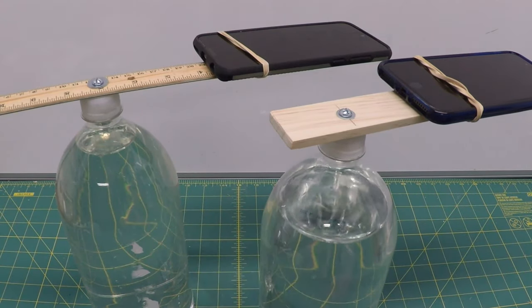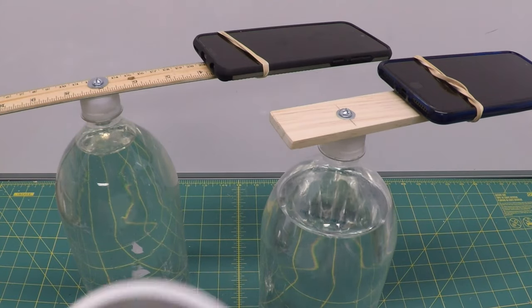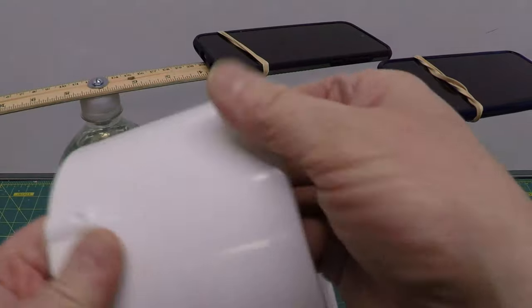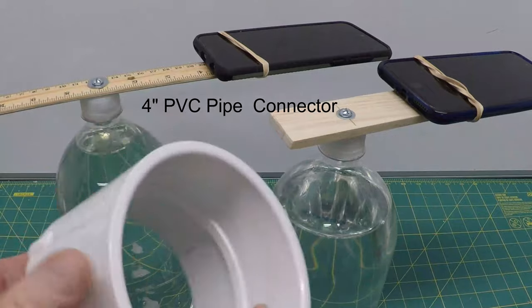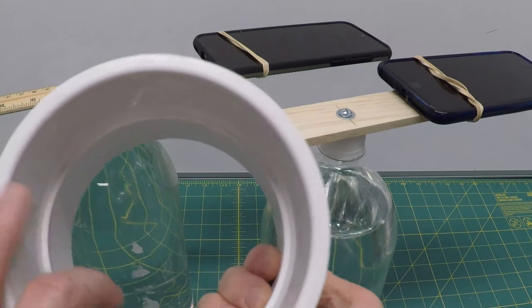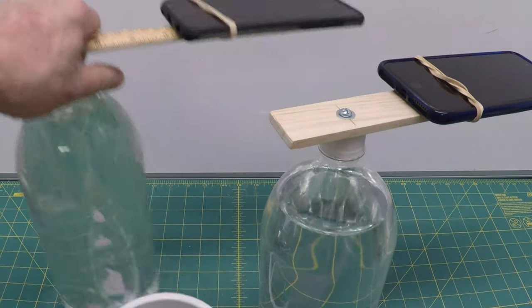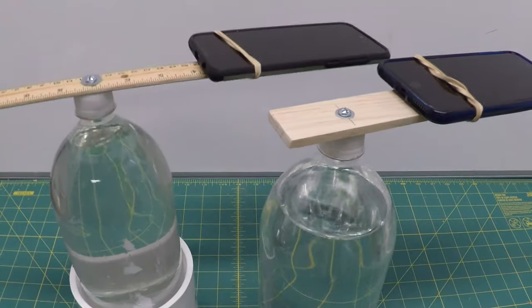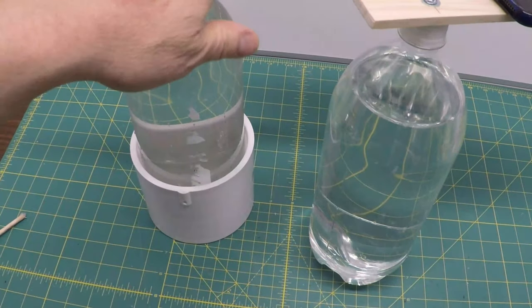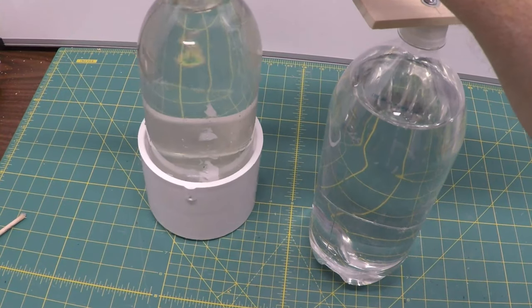You could fill this up with sand if you wanted to, I just used water because most people have water on hand. The other thing you can do is reinforce the base. This is just a two-dollar, four-inch PVC pipe, I'll put a link down below. And this is great because all you have to do is raise it up, push it down, and you've got a real solid base. I can't even tip that over.